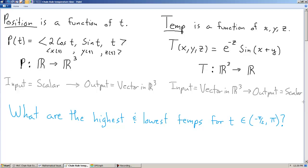And the question we're trying to address is, what are the highest and lowest temperatures for some t in a given interval? And here the interval is negative pi over 2 to pi. That's what we're trying to address.